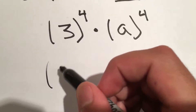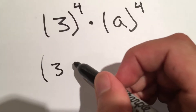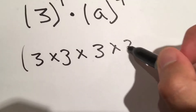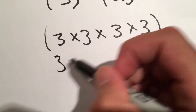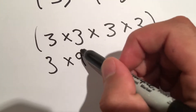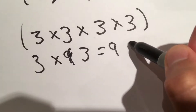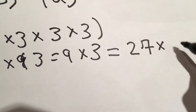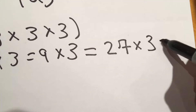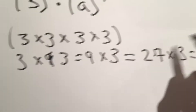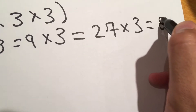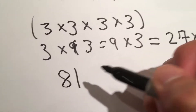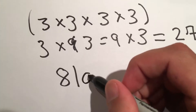3 to the 4th power is just 3 times 3 times 3 times 3. 3 times 3 is 9, times 3 again is 27, times 3 again is 81. So we have 81 times a to the 4th.